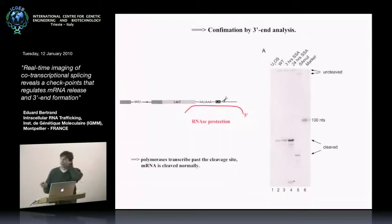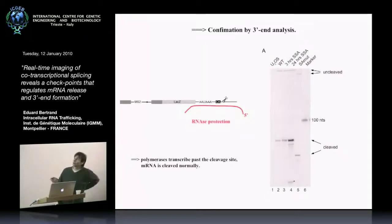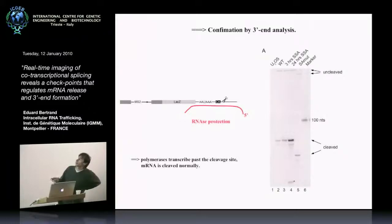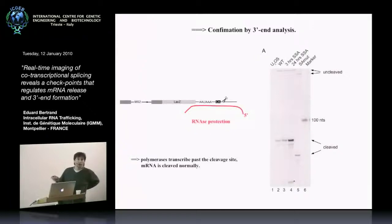To confirm this, we did biochemical analyses. The first was to look at the ends of the RNA using an RNA protection assay with a probe overlapping the cleavage site at the 3-prime end. In normal cells, you see the un-cleaved pre-mRNA and the cleaved message. When you treat with spliceostatin, you don't get any change in the un-cleaved RNA, but you see an increase in signal for the cleaved RNA, and you also detect shorter products apparently trimmed from the 3-prime end. This tells you the spliceostatin treatment doesn't affect cleavage — the RNA is indeed cleaved and made properly — and the retained species is probably slightly shorter than the mature species.